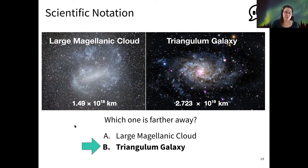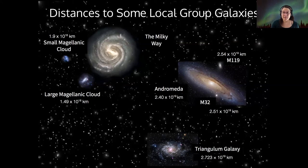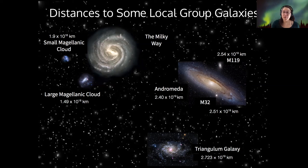Alright, so again, here are all of the distances. Now they're all expressed in scientific notation. So no surprise, since we said that the Small Magellanic Cloud and Large Magellanic Cloud were satellites of the Milky Way, those are one order of magnitude closer to us than the galaxies of Andromeda and M32 and M119.